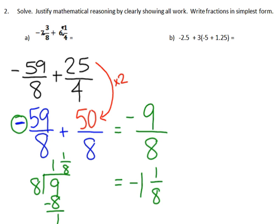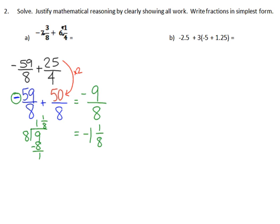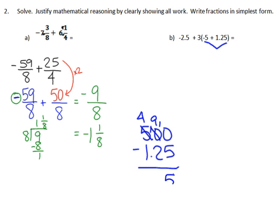Part B. I'm going to need to use order of operations for this one. The first thing I'm going to do is look at the parentheses. I need to add negative 5 plus 1 and 25 hundredths. Those have different signs, so I'm going to subtract the absolute values, putting 5 on top because that has a larger absolute value, and then borrow. That comes out to 3 and 75 hundredths, but since I had more negative than positive, it's negative 3 and 75 hundredths.